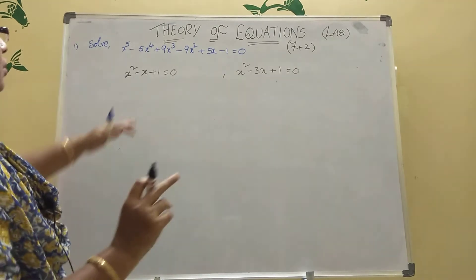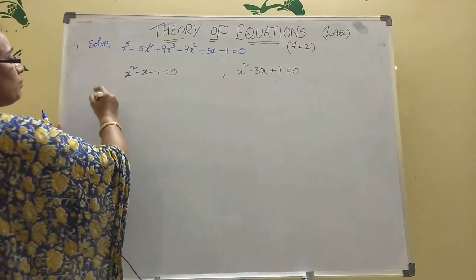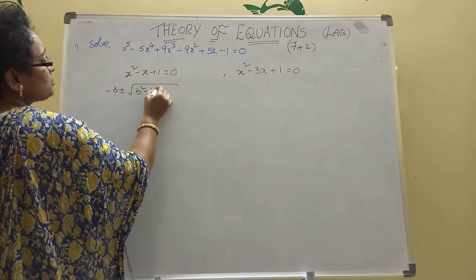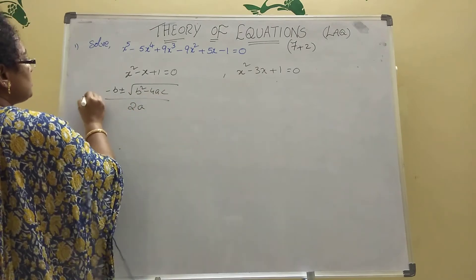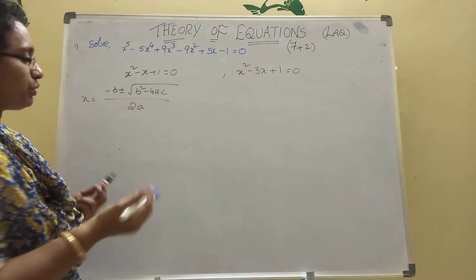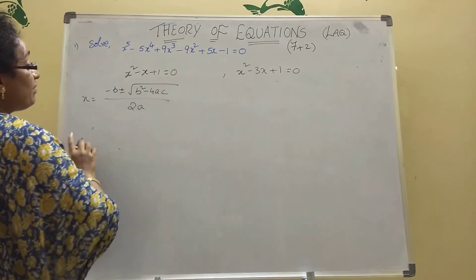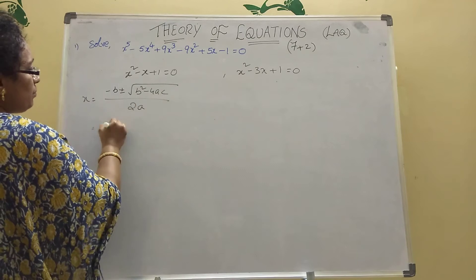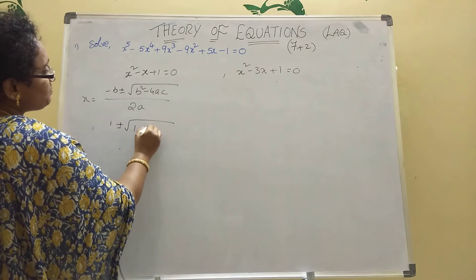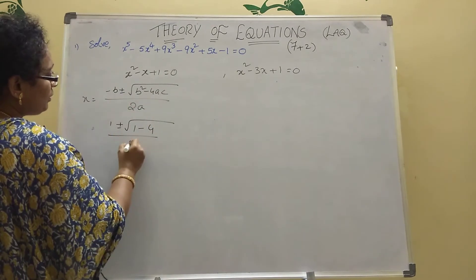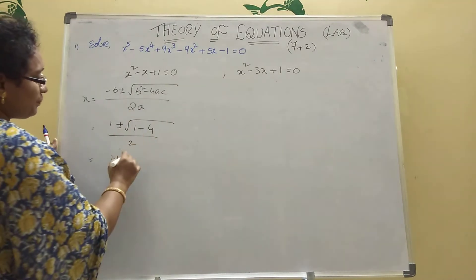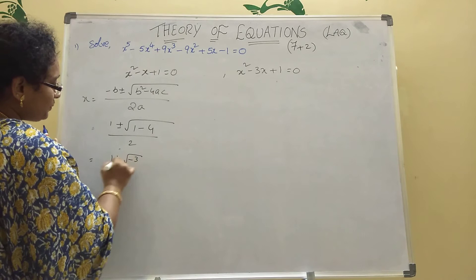Two equations are there. We split them and we will get 2+2 = 4 values. Compare with the quadratic formula: x = (-b ± √(b²-4ac)) / 2a. For x^2 - x + 1 = 0: a = 1, b = -1, c = 1. Apply: x = (1 ± √(1 - 4)) / 2 = (1 ± √(-3)) / 2.